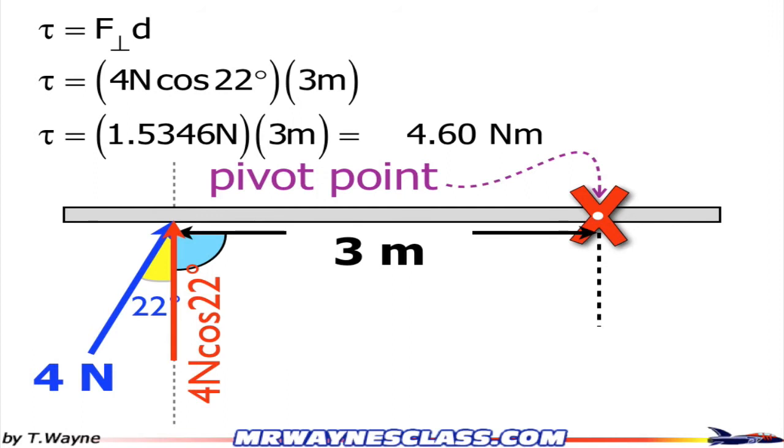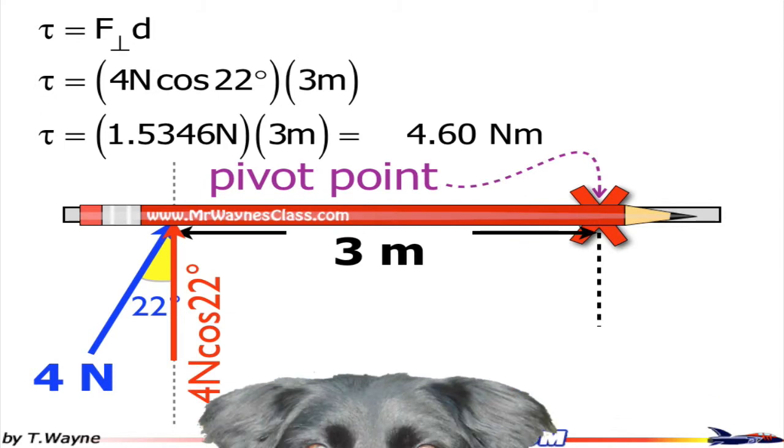Now I've got to figure out if this is a positive or negative torque around that pivot point. So to do that, I'm going to use my pencil test. I'm going to call in my dog Sophie to help give me a little bit of help here.